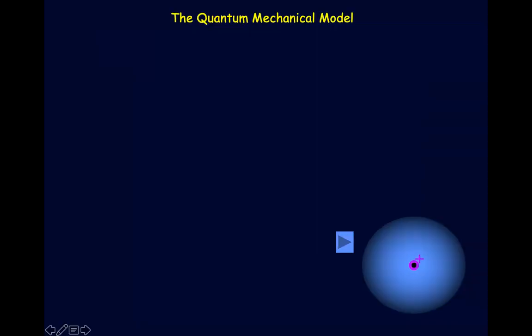We're going on to the last model of the atom, and that's going to be the quantum mechanical model. This model is a little more complicated than what we've done in the past. We got through Bohr, who had the rings — the energy levels around the nucleus where the electrons were in these orbits. Now things are going to change a little bit, because we get into a period of time where there's a lot of discovery going on, and we start to get more evidence that electrons exist a little differently around the atom.